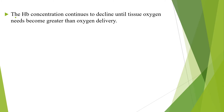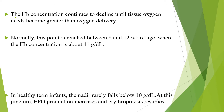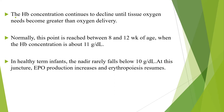The hemoglobin concentration continues to decline until tissue oxygen needs become greater than oxygen delivery. Normally, this point is reached between 8 to 12 weeks of age when the hemoglobin concentration is about 11 g per dl. In healthy term infants, the nadir rarely falls below 10 g per dl, and at this time, erythropoietin production increases and erythropoiesis resumes.